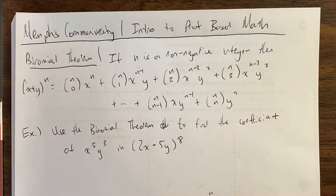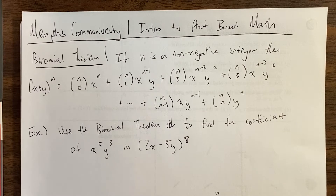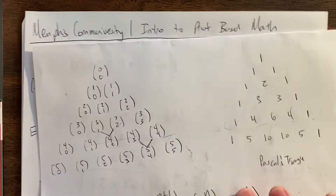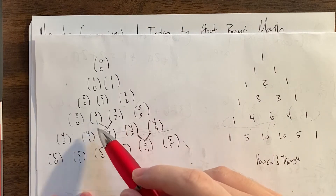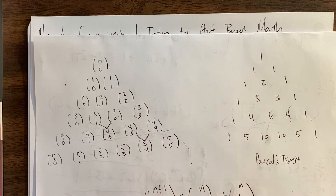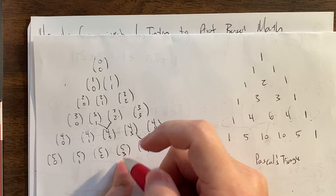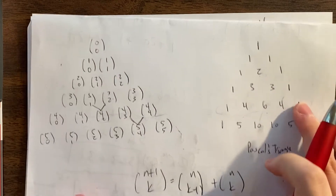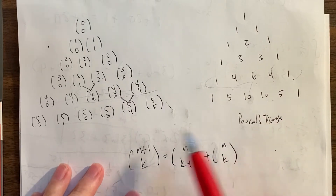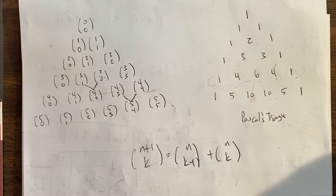You really can't talk about counting without talking about the binomial theorem, because the binomial coefficients, as we talked about in the last video, arise naturally when you are counting subsets of things. So remember that what 3 choose 1 means, or 5 choose 3 — that means you are counting the number of subsets of size k. For 5 choose 3, that would be size 3, when you are choosing between 5 different possibilities.